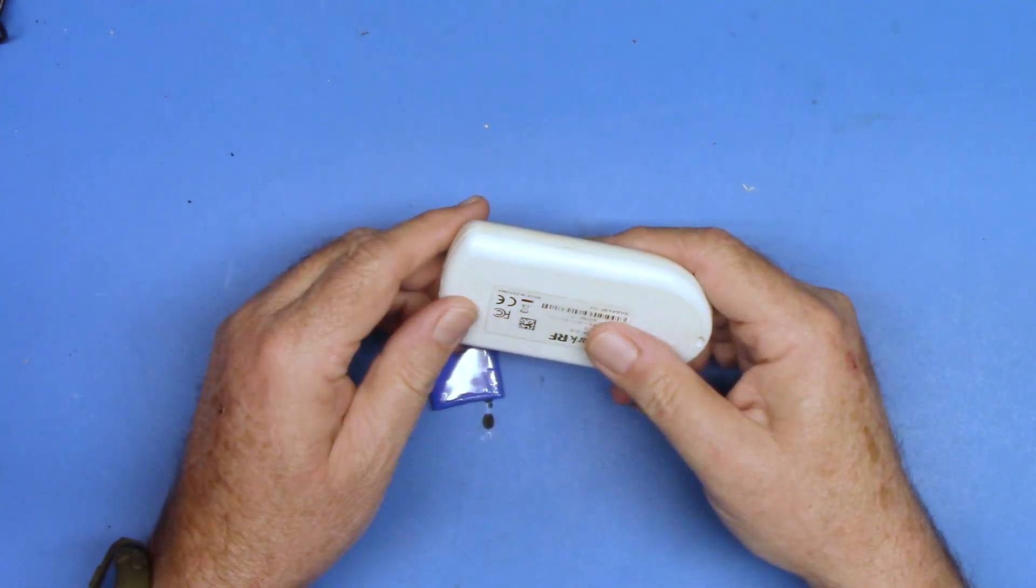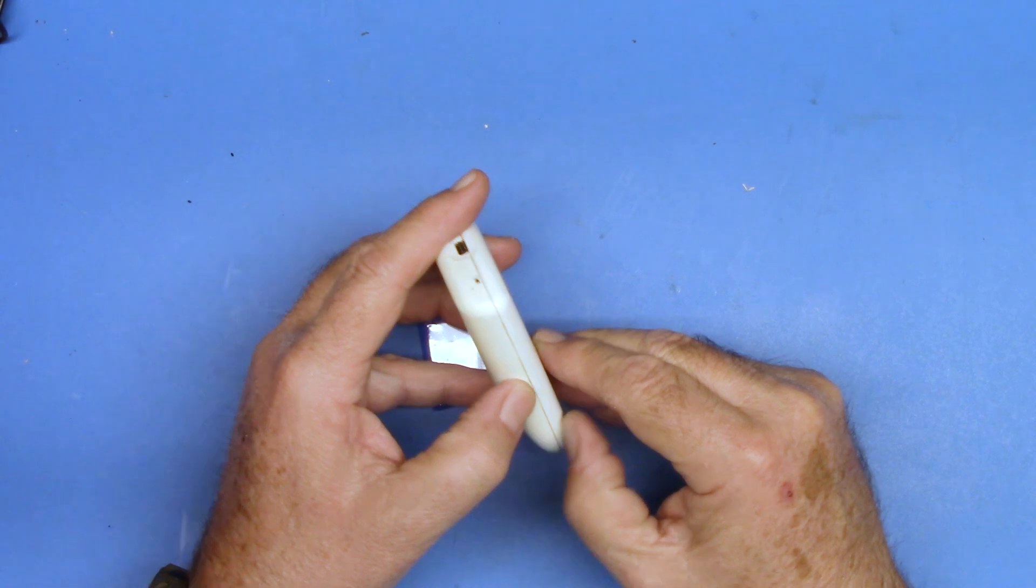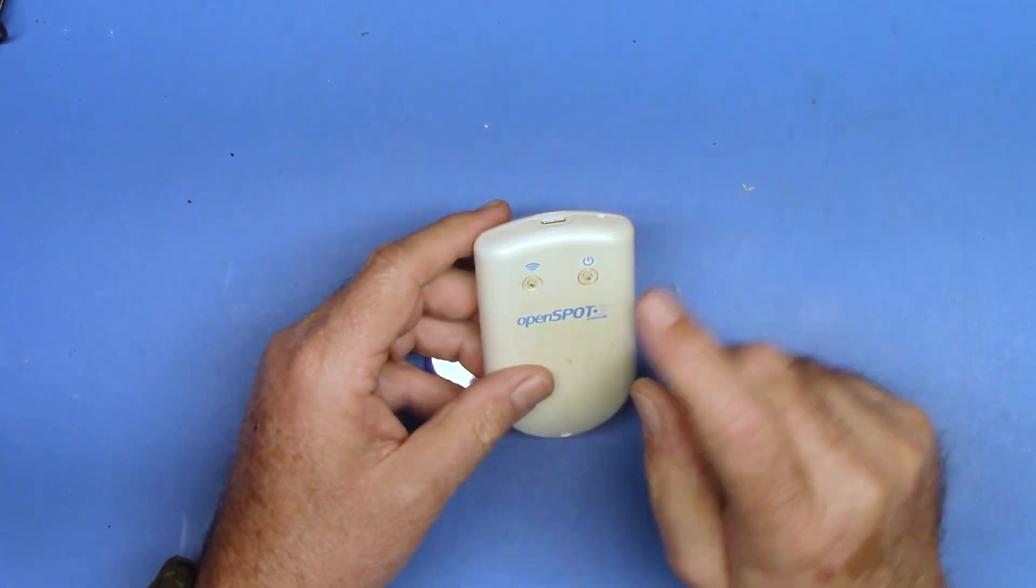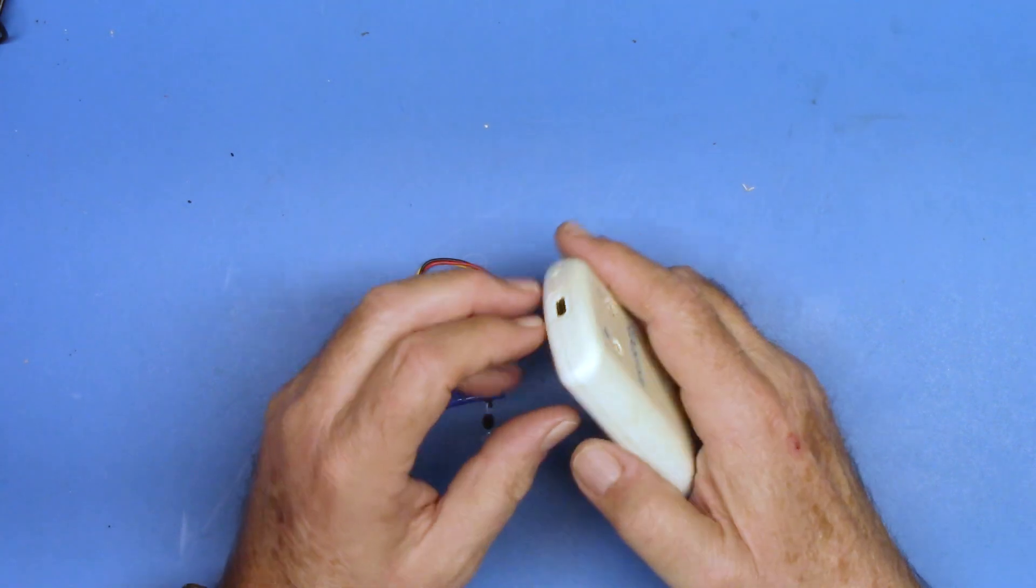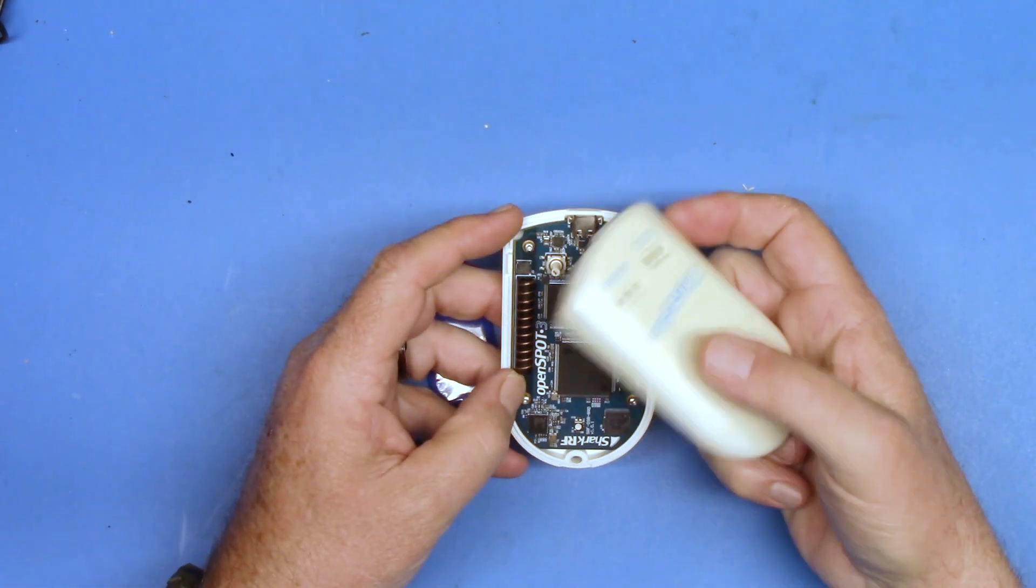So today I want to take a look at replacing the battery in this. This is my OpenSpot 3. This is a great little portable hotspot, but the battery in mine has died. So what I want to do is replace that battery, and this thing is pretty easy to get into.